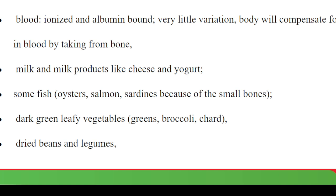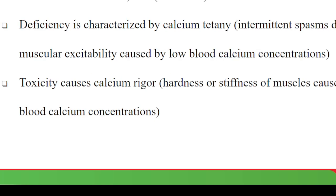Other sources include milk and milk products like cheese and yogurt. We have fish — especially sea fish like salmon and sardines — because of their small bones. You can include silver fish, locally called mukene or engege depending on where you come from. We have dark green leafy vegetables like nakati, sukuma wiki, dodo, broccoli, and kale. We also have dried beans and legumes, and calcium-fortified foods like tofu, the bean curd.